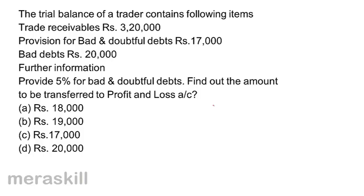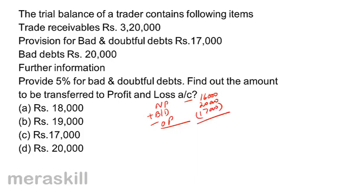The amount to be transferred to profit and loss account = new provision + bad debts − old provision. New provision is 5% of 3,20,000 = 16,000. Bad debts were 20,000. Less old provision 17,000. So you get 16,000 + 20,000 − 17,000 = 19,000. Correct answer should be B, 19,000.